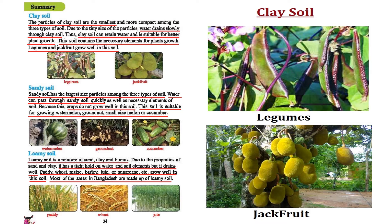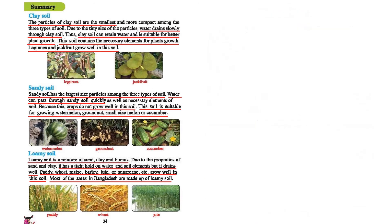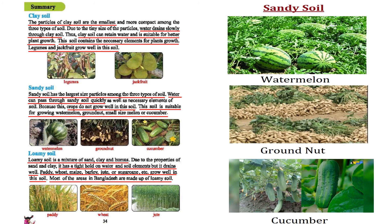Sandy soil has the largest size particles among the three types of soil. Water can pass through sandy soil quickly, along with the necessary elements of the soil, which is why crops don't grow well in this soil. This soil is suitable for growing watermelon, groundnut, small-sized melon, or cucumber.